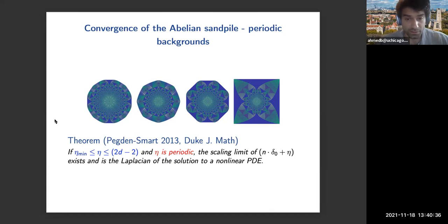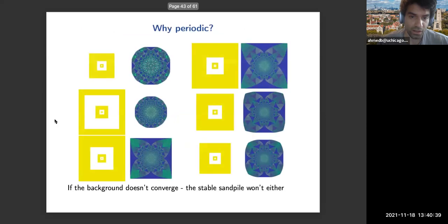Their result applies in this case, but why do you need a condition like periodicity? Well, here's a numerical counterexample where the background itself does not converge, therefore you don't expect the sandpile to either. In this case, the background as you move away from the origin oscillates between longer and longer stretches of zeros and twos, and so the sandpile is oscillating between the all two sandpile and the all zero sandpile, and so you don't have convergence in this case.